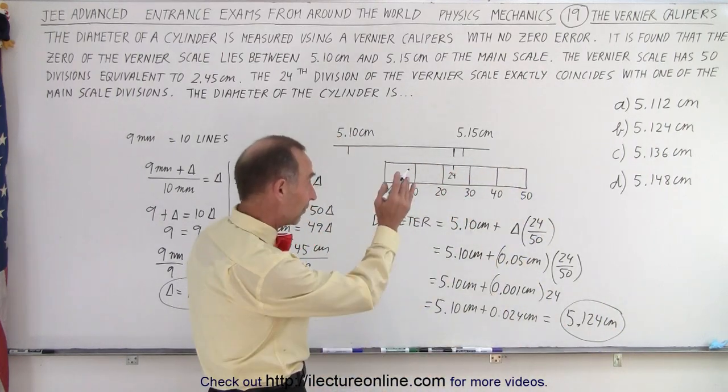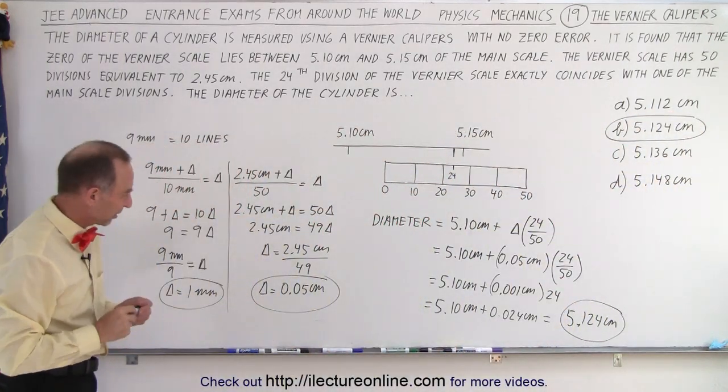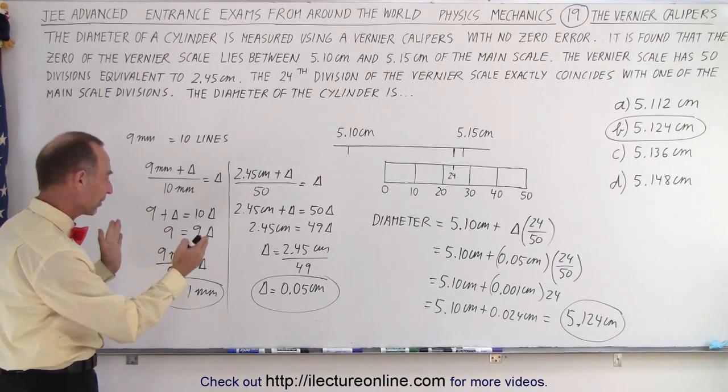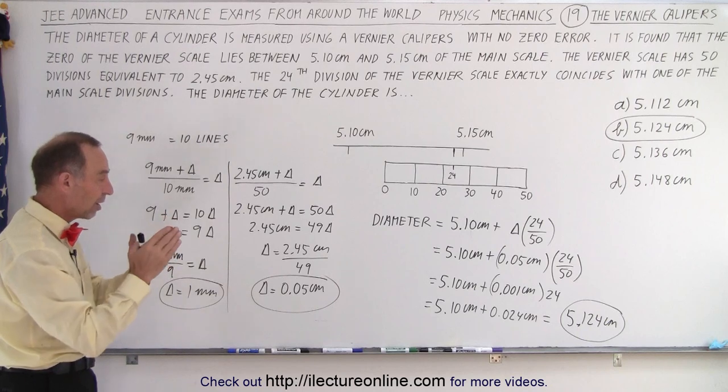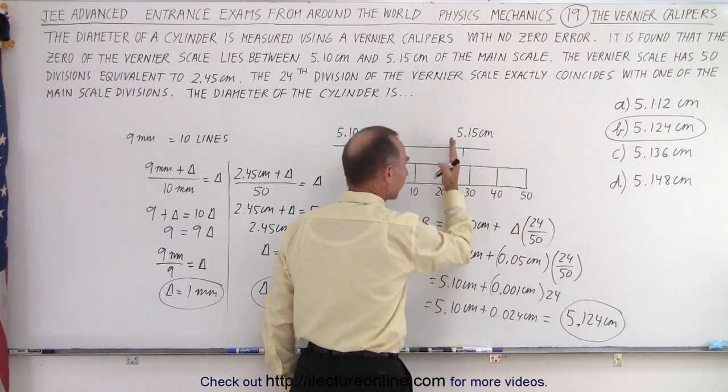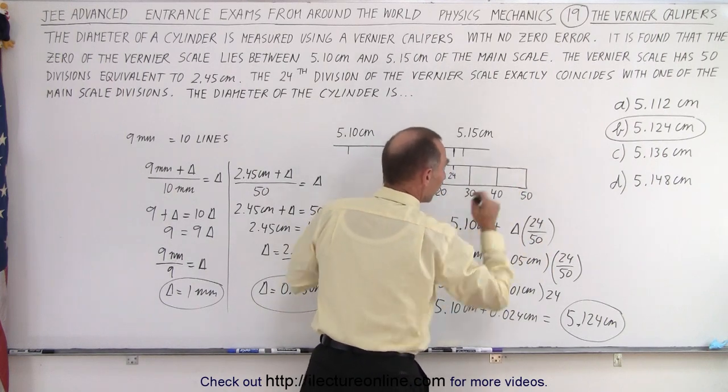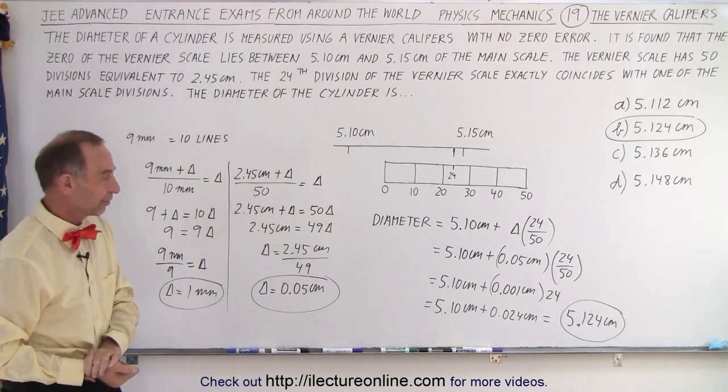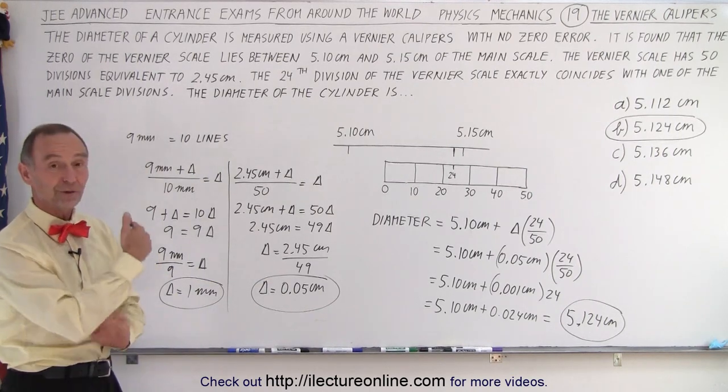And notice, that's one of the answers. It's answer B. That's how we figure out how to read a vernier caliper on a test. When you have one in your hand, it's easier to figure out. But if you have to do it theoretically, that's the way you approach it. You first find the delta representative of the vernier scale, then you multiply that delta times the ratio of the line that lines up perfectly with the main scale and divide that by the 50 total divisions on the vernier scale, then you add that to the initial reading and you get the final reading. And that is how it's done.